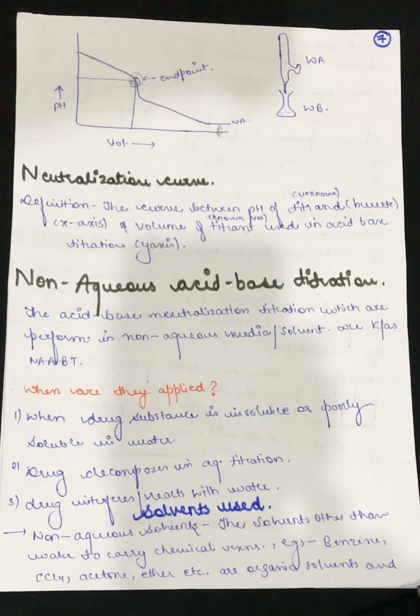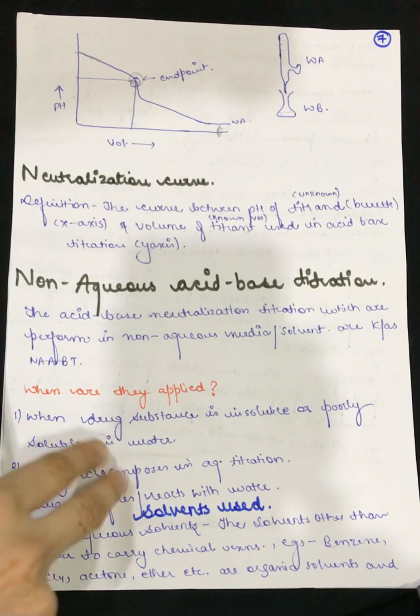Now let's see what are the solvents used in non-aqueous acid-base titration. The solvents other than water to carry chemical reactions like benzene, carbon tetrachloride, acetone, ether, etc. are organic solvents.